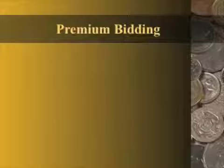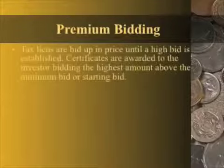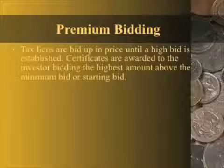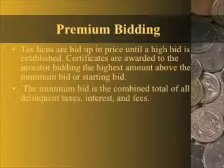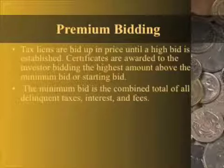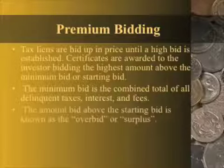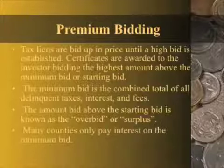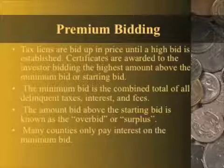Premium bidding is probably the most common bidding system that most people are aware of. It's very simple — a tax lien is bid up in price until a high bid is established. Certificates are awarded to the investor that bids the highest amount above the minimum bid. The minimum or starting bid is the total amount of all delinquent taxes along with any interest, penalties, and fees. The amount bid above that is known as the overbid or the surplus. Many counties only pay interest on the minimum bid, which can dramatically affect your overall investment.